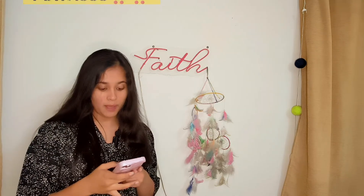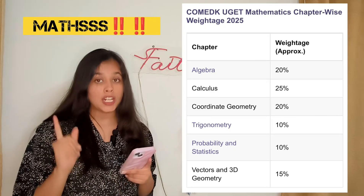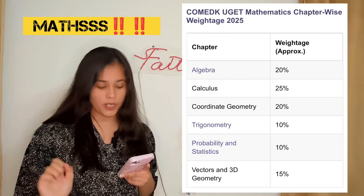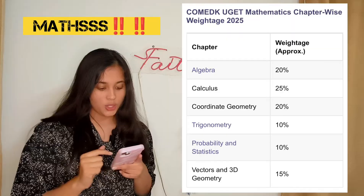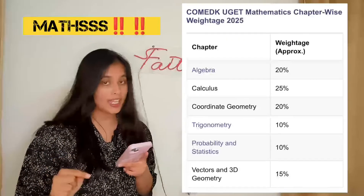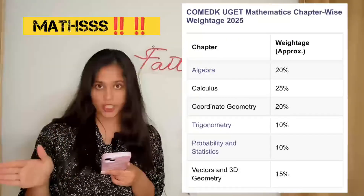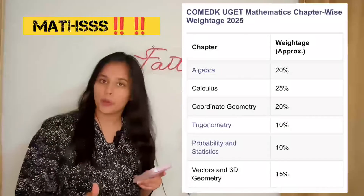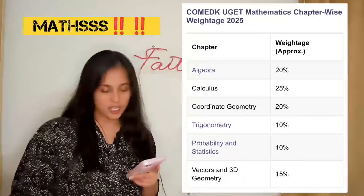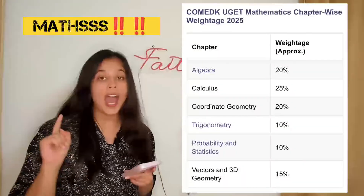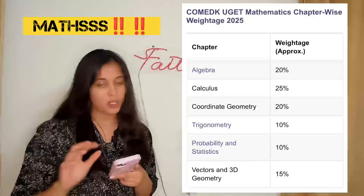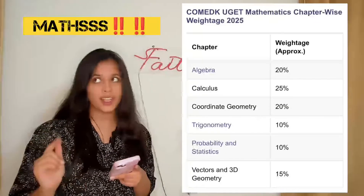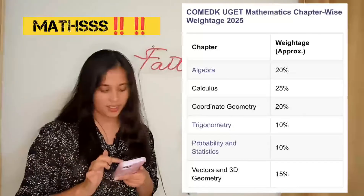Let's start with maths first. In maths, algebra constitutes 20% of the exam questions. You should mainly focus on quadratic equations, permutations and combinations, binomial theorem, progressions which are AP, HP and GP, and complex numbers. Complex numbers and all these algebra questions are a must in COMEDK.